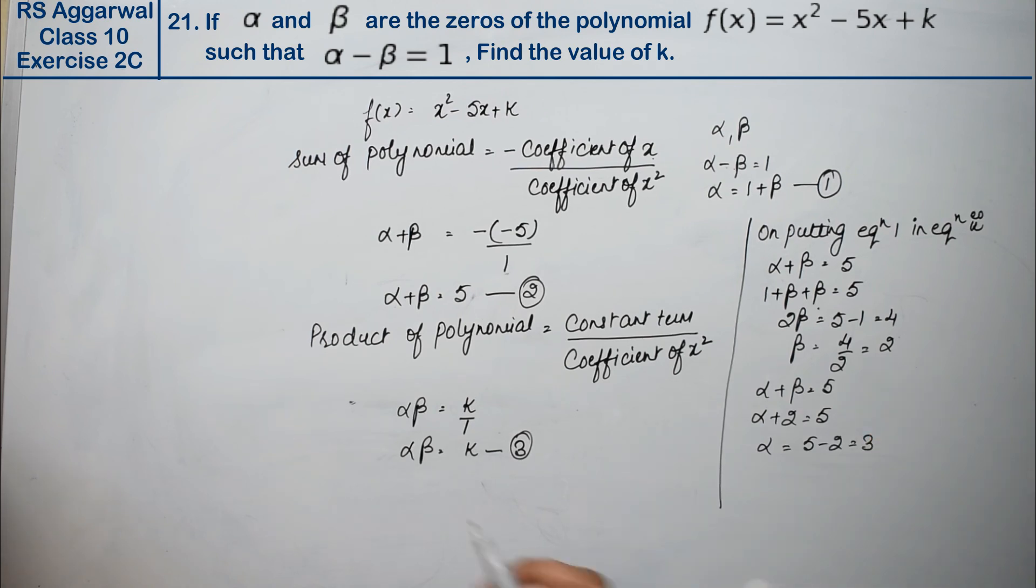So we got α and β values, and we'll substitute them here to find k. Alpha is 3 and beta is 2, equals k. So k value is 6, which is the answer.